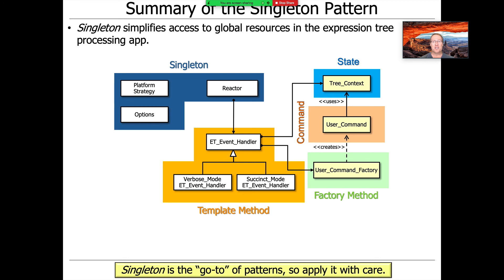Reasonable people might argue I shouldn't have used it at all, but I wanted to show you how to use it if you need to. You can think of singleton as kind of the goto of patterns — if you use goto in your C++, C, or Java programs, people will look at your code and mock you. You should use it sparingly and be prepared to justify why you did it. Same thing is true with singleton — people will mock you if you overuse it. I'm not saying never use it, just use it sparingly.